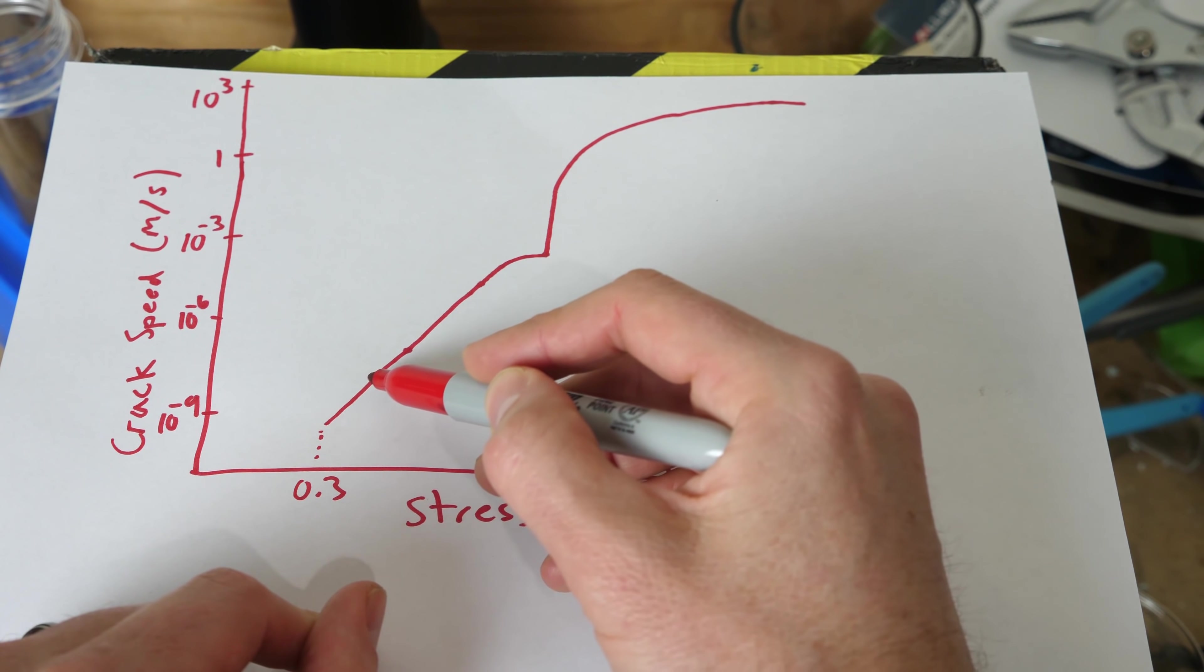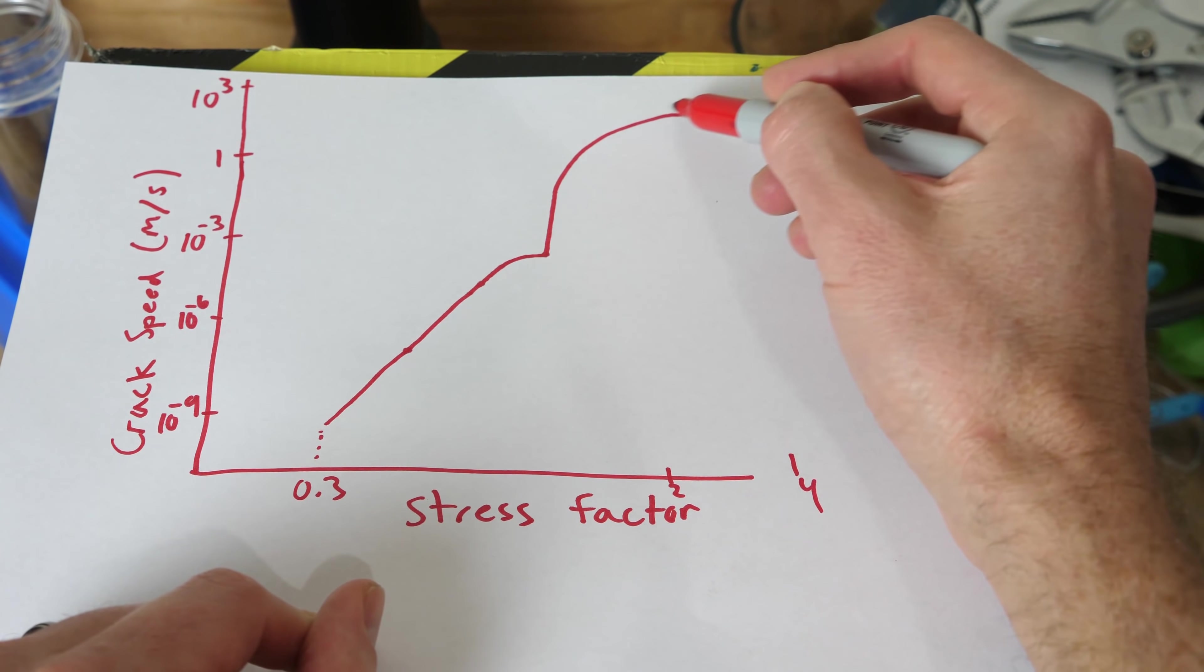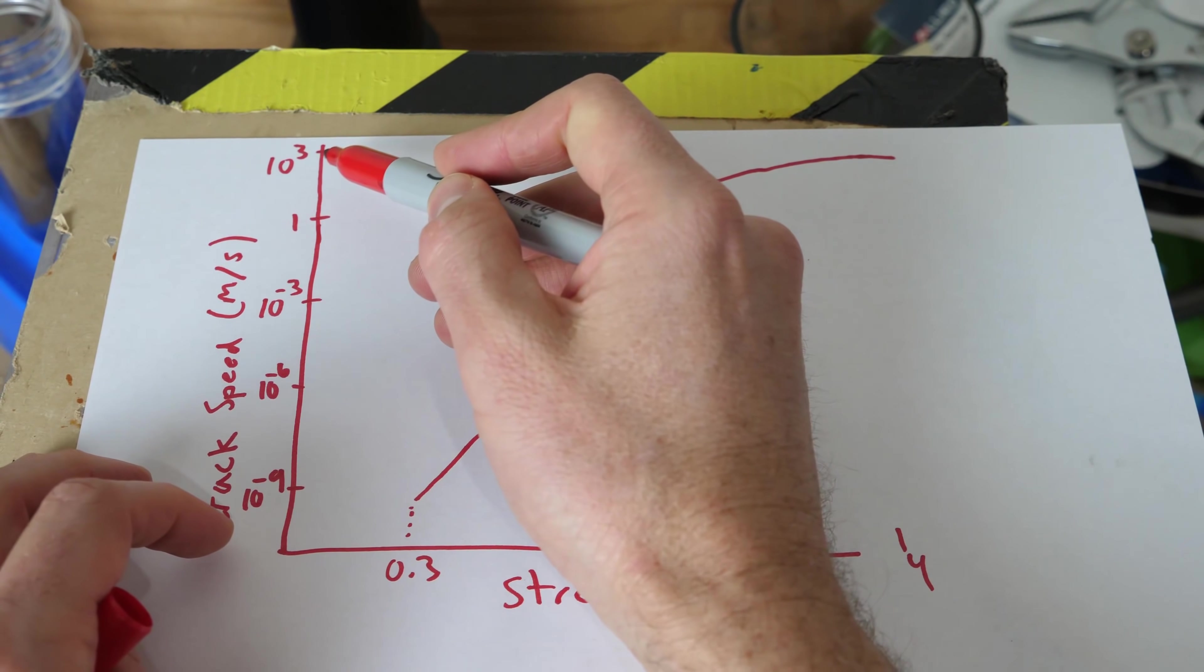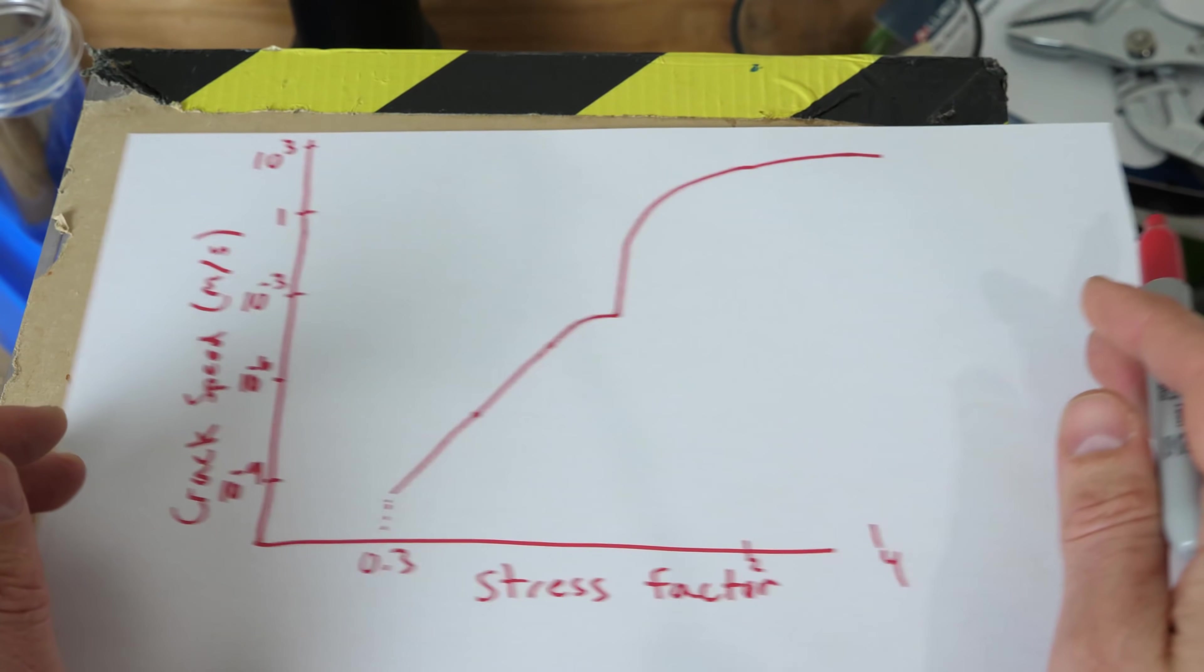As it begins to break more and more, it speeds up and up and up, and eventually it maxes out at the speed of sound in glass. For this specific chart here, I put 10 to the three meters per second. That's an average speed of sound in glass.